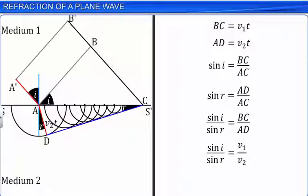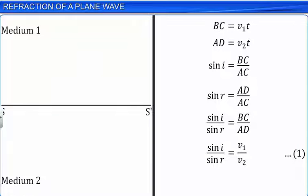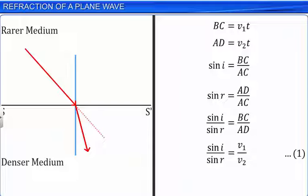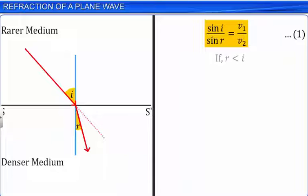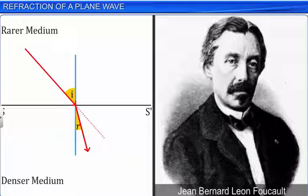We know that if light travels from a rarer medium to a denser medium, it bends towards the normal, and hence the angle of refraction R is less than the angle of incidence I. From equation 1, if R is less than I, then V2 must be less than V1. Thus, according to Huygens' wave theory, the speed of light in a denser medium is lesser than the speed of light in a rarer medium. This is in contradiction to the assumptions made by Newton in his corpuscular theory of light. In 1850, it was Foucault who first determined the speed of light experimentally and confirmed that the speed of light indeed is less in water than in air.